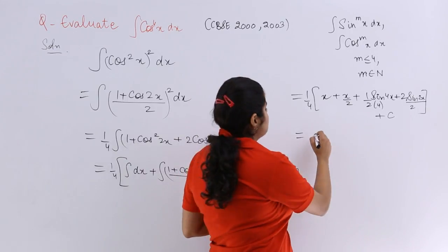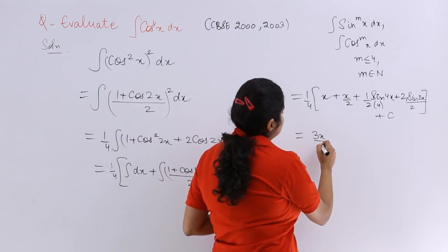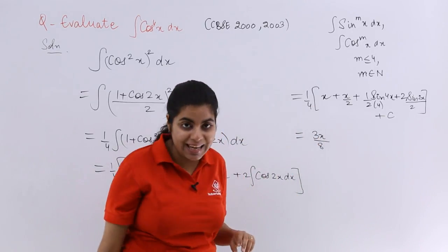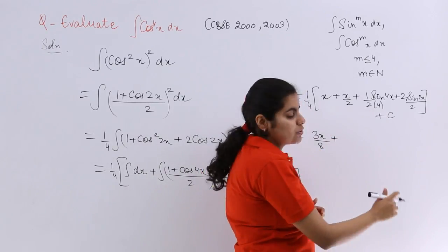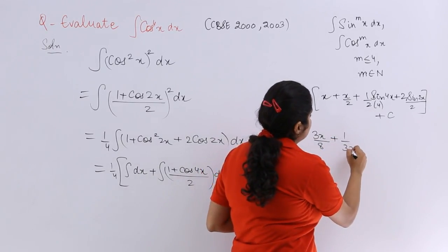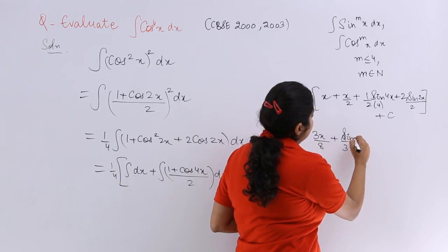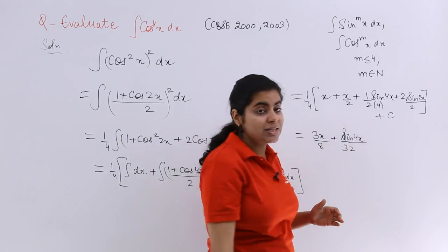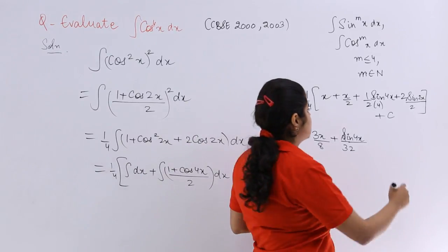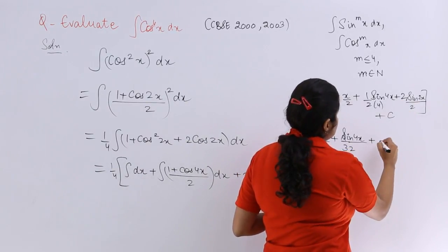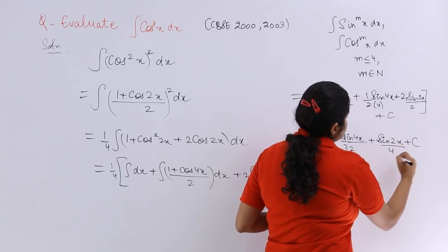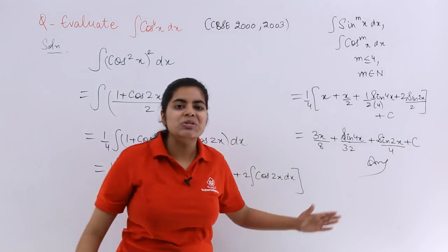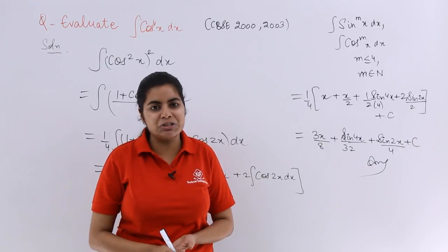x by 2 plus x is 3x by 2 and 3x by 2 outside 4 makes it 3x by 8. Plus here it is 4, 4 times 2 is 16, 2 times 2 is 32. So 1 by 32 is there. And here it should be sine 4x. Plus 2 and 2 getting cancelled. It is nothing but sine 2x whole over 4 plus the constant of integration C. So this is the answer to the evaluation of the given integral.